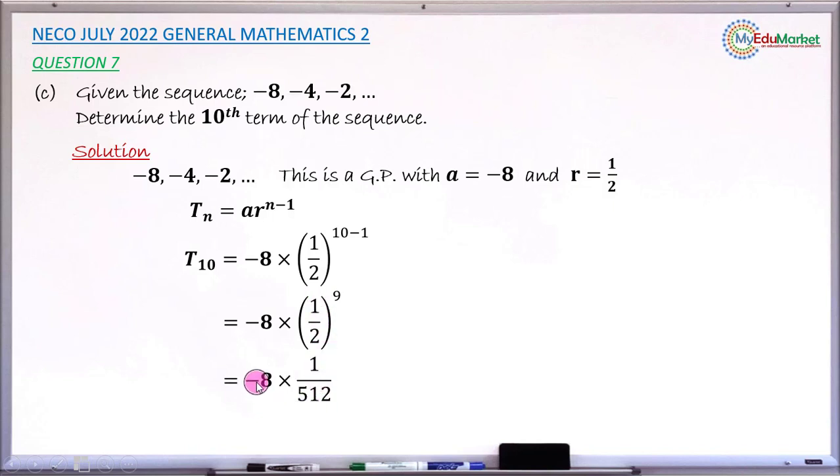So we have -8 × 1/512. Simplifying: 8 divides into 512 giving 64, so the result is -1/64.